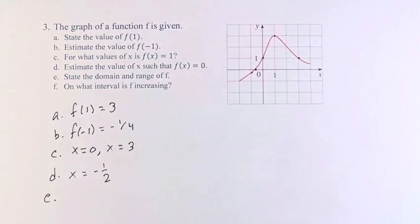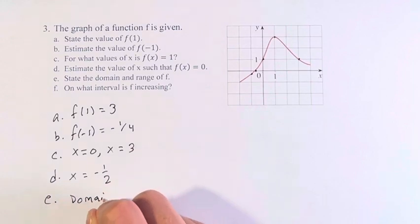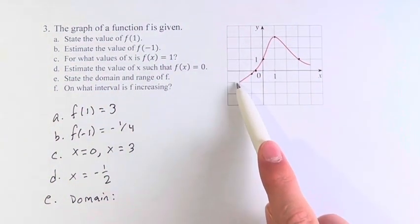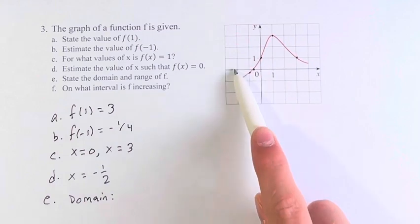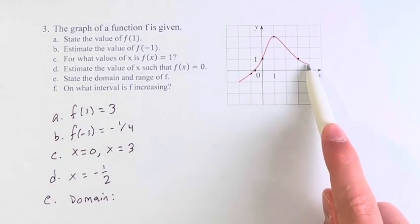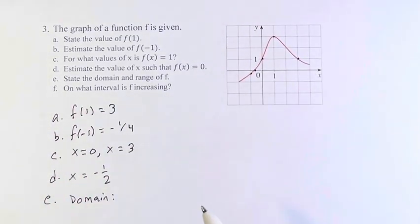Next, let's find the domain and range of f. The domain is the x values that the function can take on. Going left to right, we start here at x equals -2 and can go all the way to this point at x equals 4 continuously with no breaks.